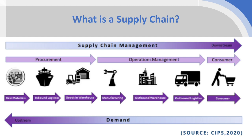Supply chain management is simply the act of or the function of managing this complex web of companies in order to align all of them and to get all of the activities functioning in concert in order to produce these products and services that are ultimately sold to the consumer.